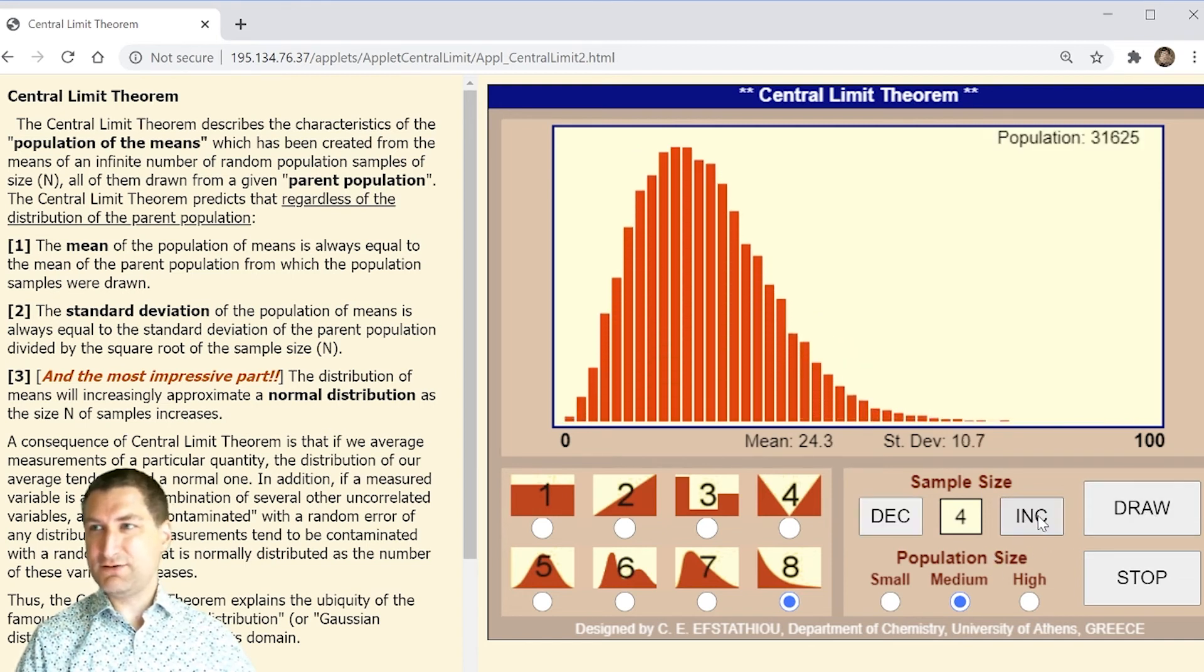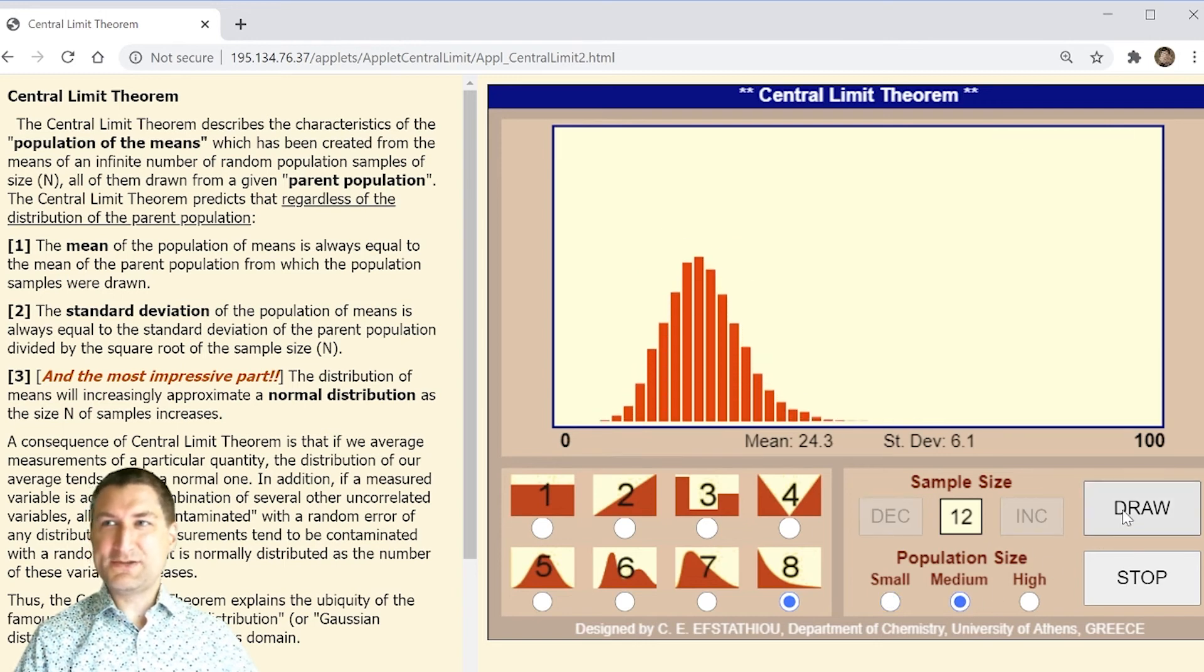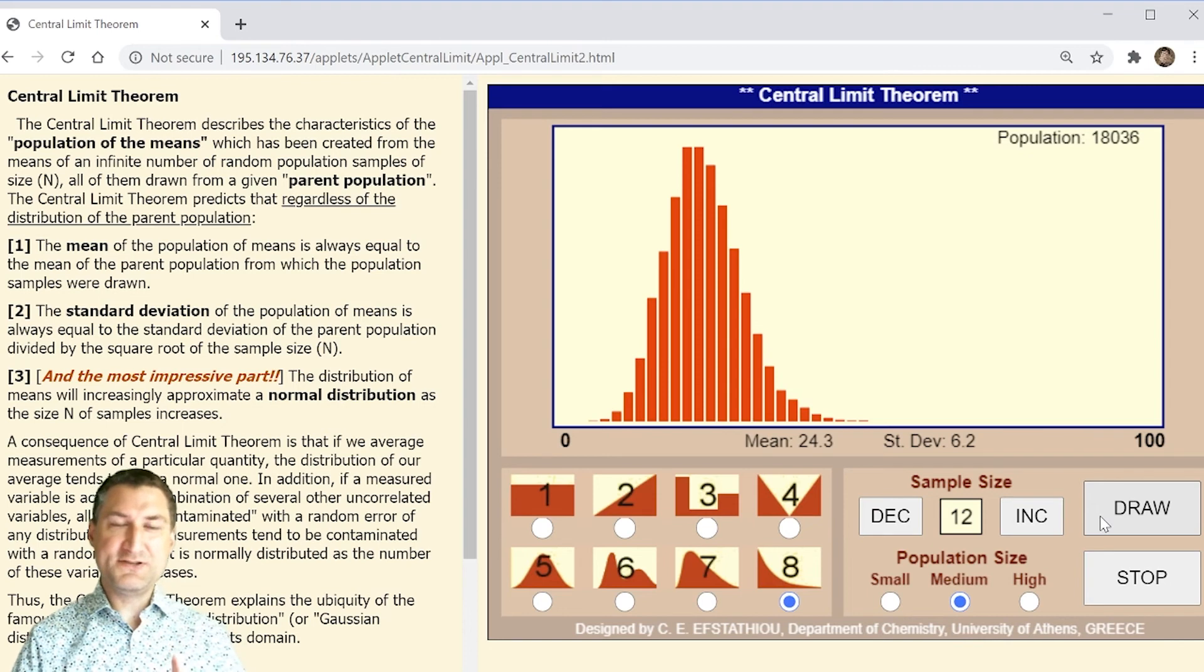If I add up like nine of those, then I start to get a pretty Gaussian-looking thing again. This is kind of a fun applet to play with, and hopefully it convinces you that number one, it doesn't take very long for things to start looking Gaussian as I add them up, and number two, this really motivates why we cared about the Gaussian so much in the first place, because in the limit, in some sense, everything eventually becomes Gaussian.